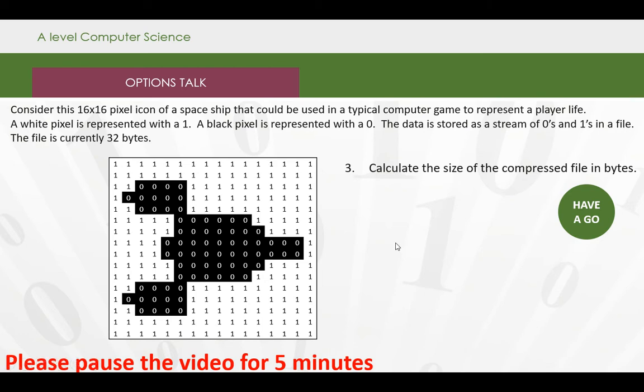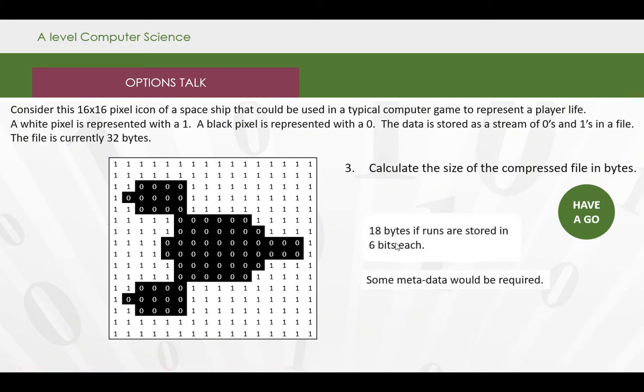Hopefully you've had a go at that. Now, assuming that we're using 6 bits for each run, which we are, we would need 18 bytes in order to store the compressed version of the image. So we've got a reduction of 14 bytes, which is fairly significant on a 32-byte file.